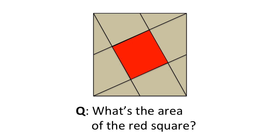Start with the square whose side length is 1, then draw four line segments that connect each corner to the middle of the opposite side. The question? What's the area of the red square?